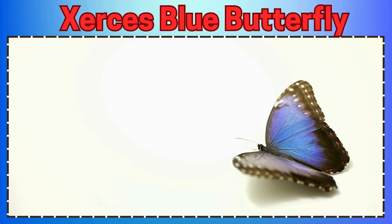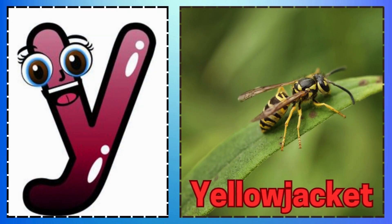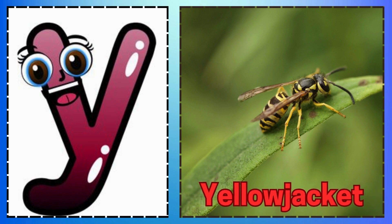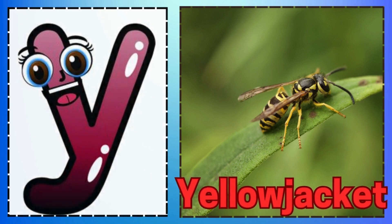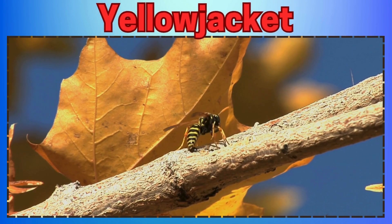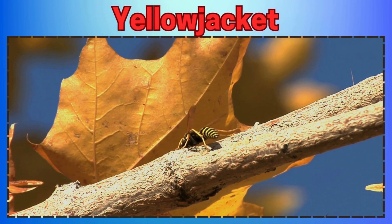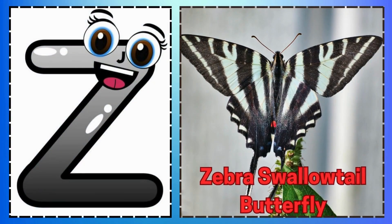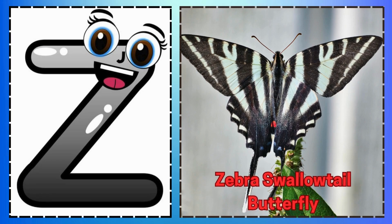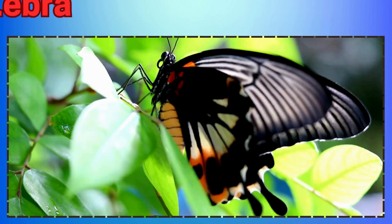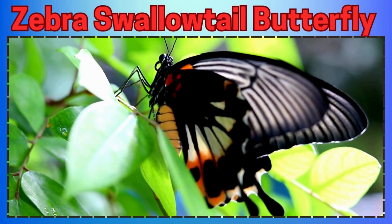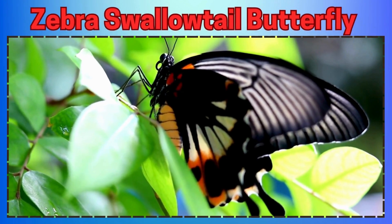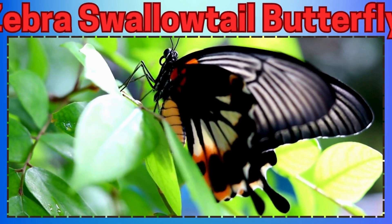A is for Ants so Tiny and Strong. B is for Butterfly Fluttering Along. Y is for Yellow Jacket. Z is for Zebra Swallowtail Butterfly. I is for Inchworm Moving like a Wave. J is for Japanese Beetle Shining Brave. K is for Katydid Singing at Night. L is for Ladybug.